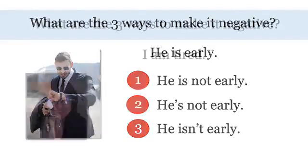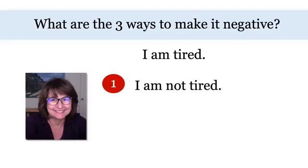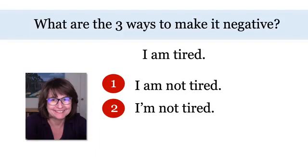One more. What are the three ways to make it negative? The sentence says: 'I am tired.' But this is me and I feel fine. The first way: add 'not' — 'I am not tired.' The second way: 'I'm not tired.' And the third way: nothing — remember, with 'I,' you can't do the third way in the negative.